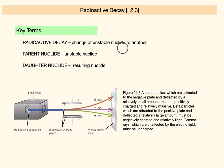There's a few key terms I want to bring to your mind as we start. Radioactive decay refers to the change of unstable nuclei to another. The material undergoing the reaction is called the parent nuclide, and the resulting nuclide is called the daughter nuclide.